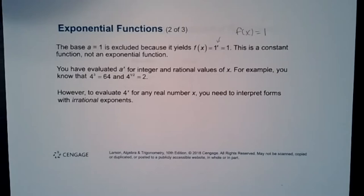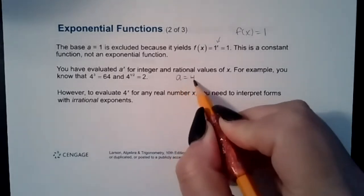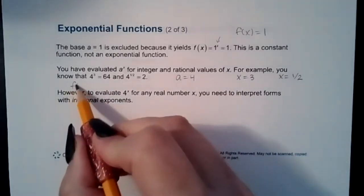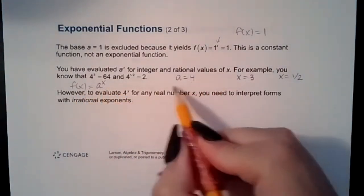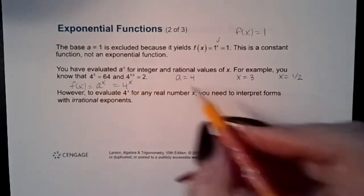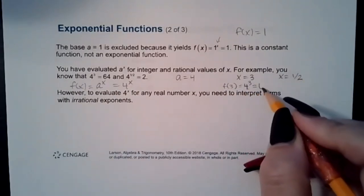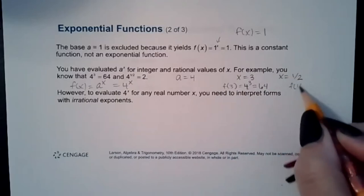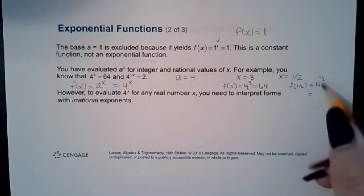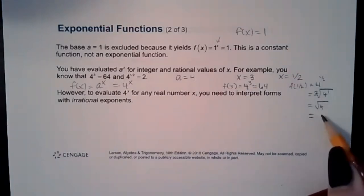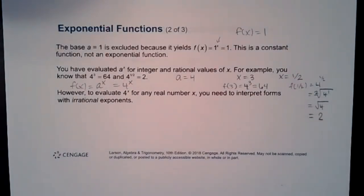You have evaluated exponential expressions for integer and rational values before. For instance, if a = 4 and x = 3, f(x) = 4^x gives 4^3 = 64. When x = 1/2, you get 4^(1/2), which is the square root of 4 raised to the first power — just the square root of 4, which equals 2.